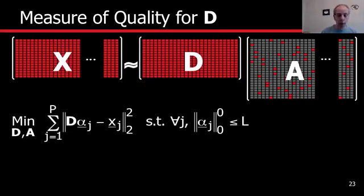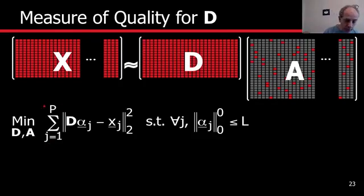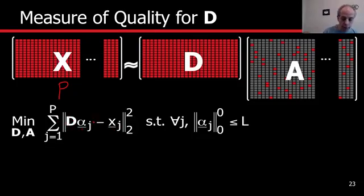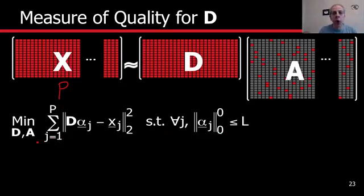The goal now is to design this dictionary. We want a sparse representation for all the signals, so we sum over all p signals. We have one dictionary for all the signals and we want a sparse representation for each one — j runs from 1 to p. A unique dictionary where all of them have to be good representations and sparse at the same time. Before, we didn't have this summation; now we want a dictionary that is good for all of them.